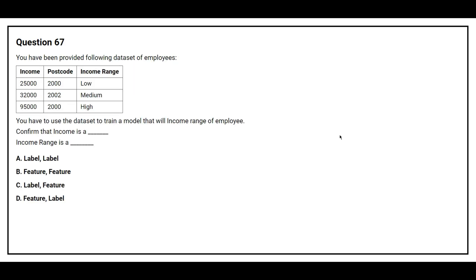Question 67: You have been provided with the following dataset of employees. You have to use the dataset to train a model that will predict the income range of an employee. Confirm that income range is a label or feature. Option A: Label. Option B: Feature. Option C: Label, Feature. Option D: Feature, Label. The correct answer is Option D: Feature, Label.